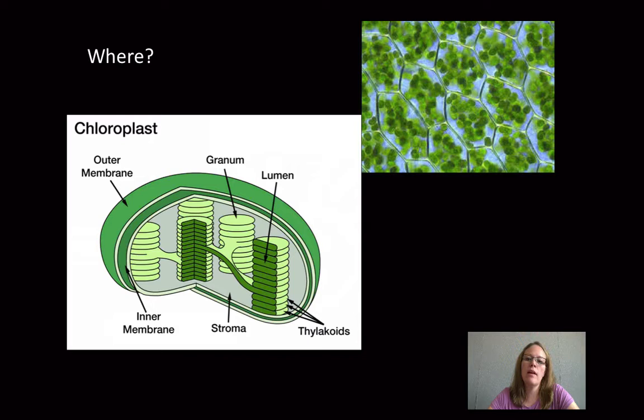So where does all this happen? The important organelle in photosynthesis is the chloroplast. You can see this picture in the top has a leaf, and there are many chloroplasts in a leaf. And here's more an illustration. So we have the outer membrane, but inside is where we're going to be focused. First, you can see these little discs are called thylakoids. And inside those discs is a part called the lumen.